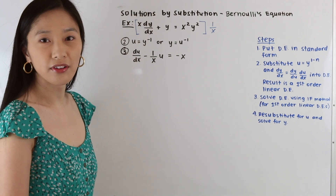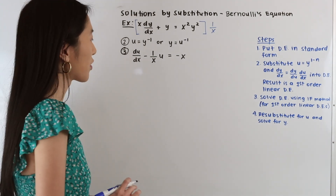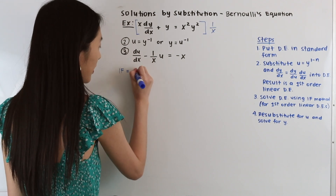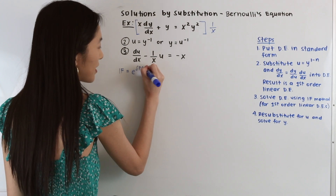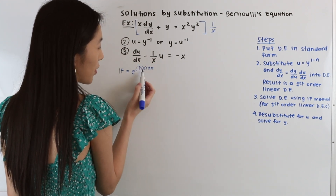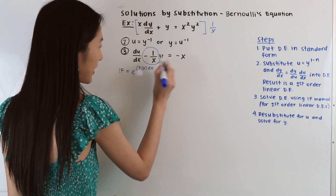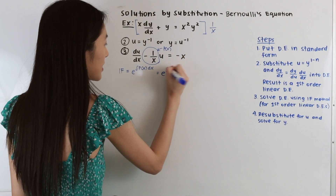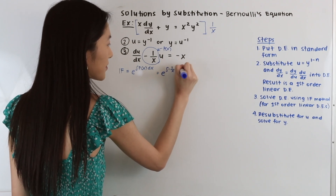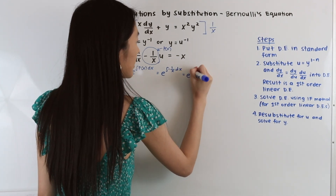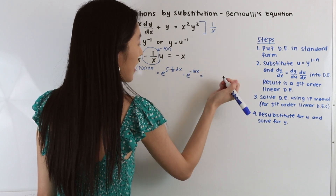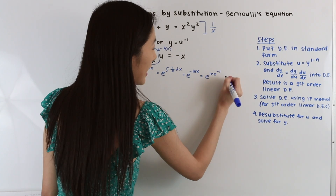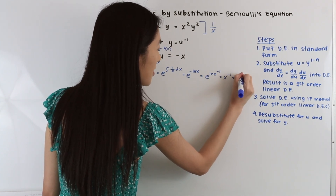Now we have a first order linear differential equation, so let's proceed as usual. We first identify the integrating factor, which is e to the integral of p(x) dx. Here p(x) = −1/x. So the integrating factor is e^(∫ −1/x dx) = e^(−ln x), which we can rewrite as 1/x.